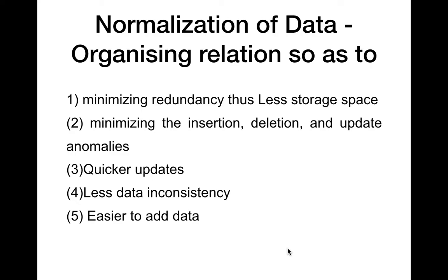The main concept behind normalization is coming up with the best relational schema design. How can we organize a relation? Relation and schema are words that can be used interchangeably. So how can we design a schema to be the best? We had seen certain design guidelines to follow, and our aim should be to reduce redundancy or repetition of data to save storage space. We should also be avoiding insertion, deletion, and update anomalies.